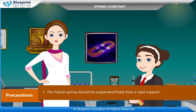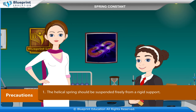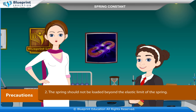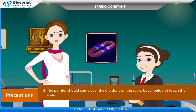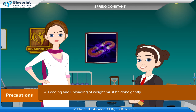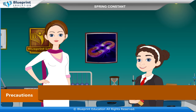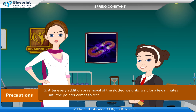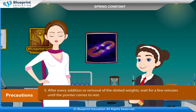Precautions: The helical spring should be suspended freely from a rigid support. The spring should not be loaded beyond its elastic limit. The pointer should come over the divisions on the scale but should not touch the scale. Loading and unloading of weights must be done gently. After every addition or removal of slotted weights, wait for a few minutes until the pointer comes to rest.